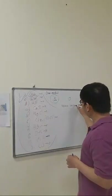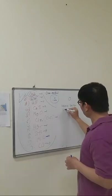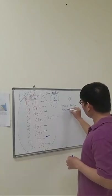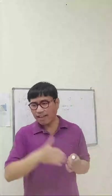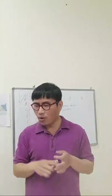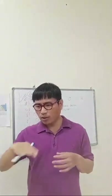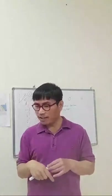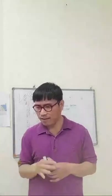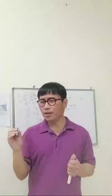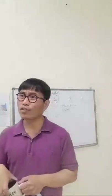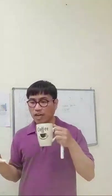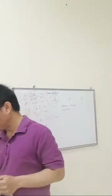Before going further, we need to differentiate what is a valence electron and an electron without any description. A valence electron is in the outermost shell; an electron without description refers to all electrons in all shells.